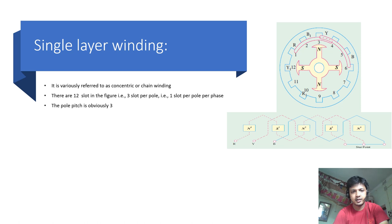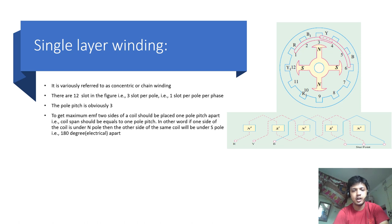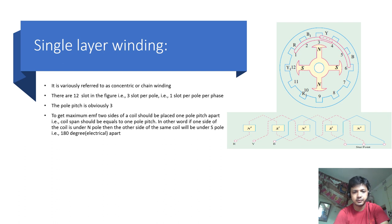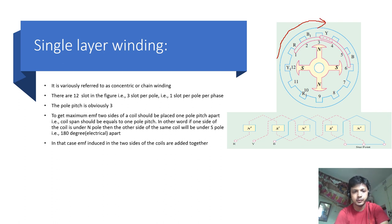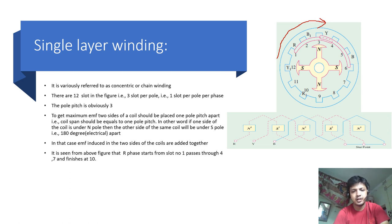The pole pitch is 3 slots and 1 pole pitch equals 180 degrees electrical. To get maximum EMF, the two sides of the coil should be placed 1 pole pitch apart; the coil span should be equal to 1 pole pitch. In other words, if one side of the coil is under the N-pole, then the other side of the same coil will be under the S-pole, that is 180 degrees electrical apart. In that case, the induced EMFs of the two coil sides are added together.